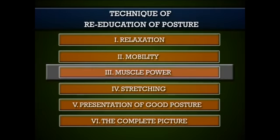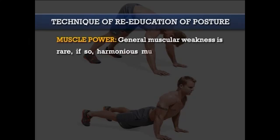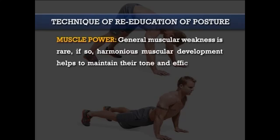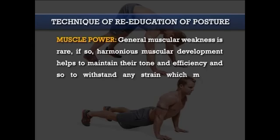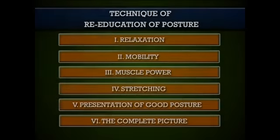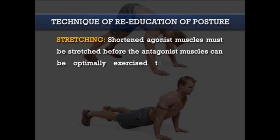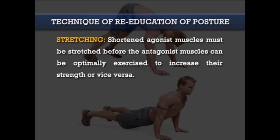The third technique is muscle power. General muscular weakness is rare, but harmonious muscular development helps maintain tone and efficiency to withstand occupational strain. The fourth technique is stretching. The shortened agonist muscles must be stretched before the antagonist muscles can be optimally exercised to increase their strength, or vice versa. Depending on the condition, manipulation may also be required to release an accompanying joint fixation, and therefore should be added to the list of posture correction therapies.